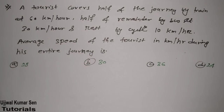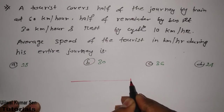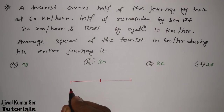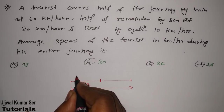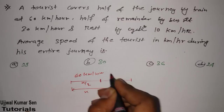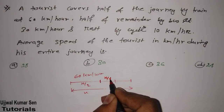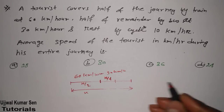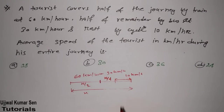In this second question, a tourist covers half of the journey by train. Let's say total journey distance is x. Half the journey (x/2) is covered by train at 60 kilometers per hour. Half of the remainder (x/4) is covered at 30 kilometers per hour. The rest (x/4) is covered by cycle at 10 kilometers per hour. We have to find the average speed of the entire journey in kilometers per hour.